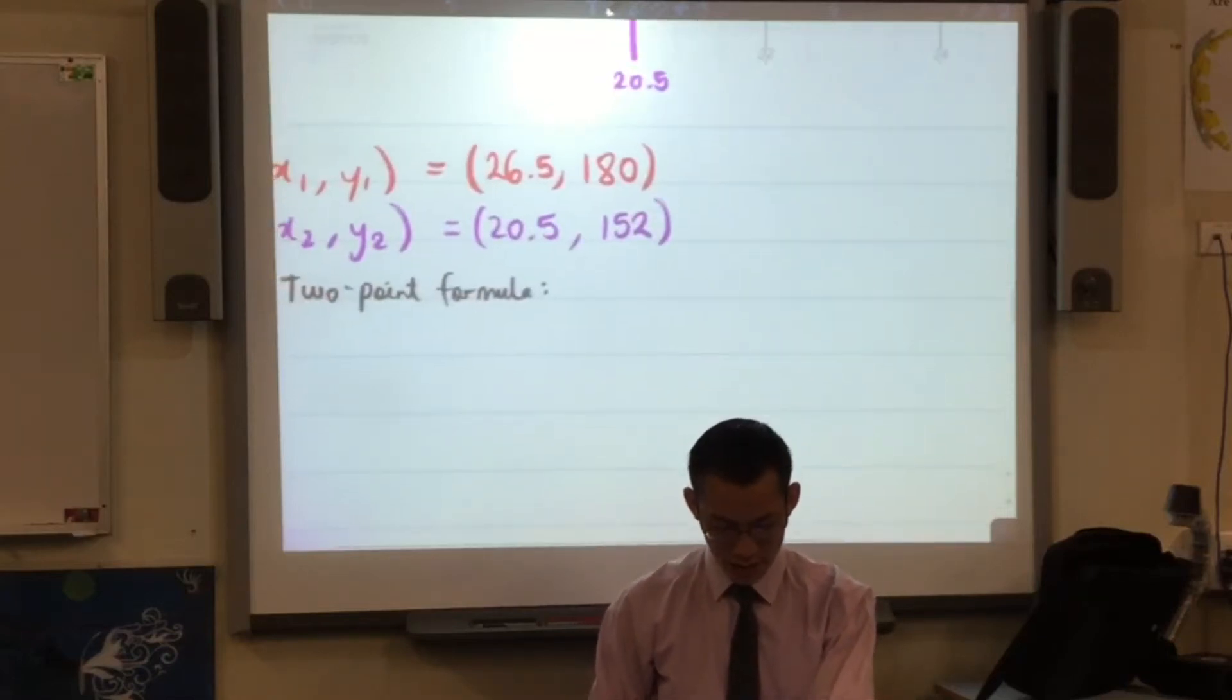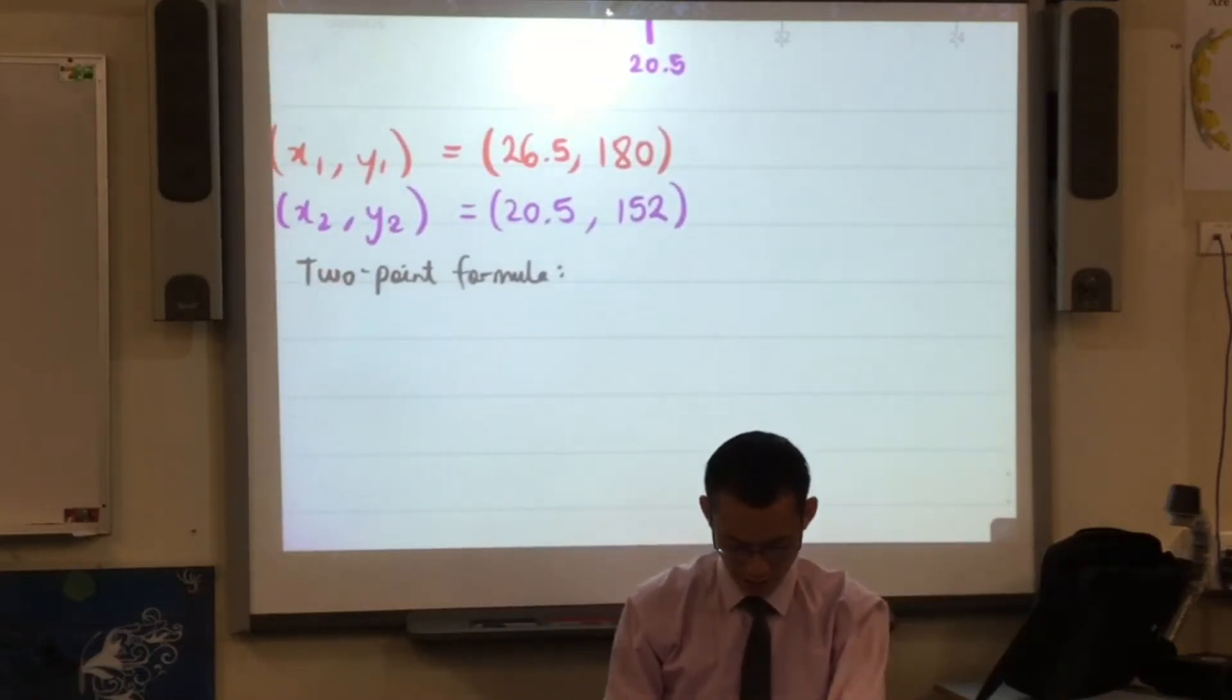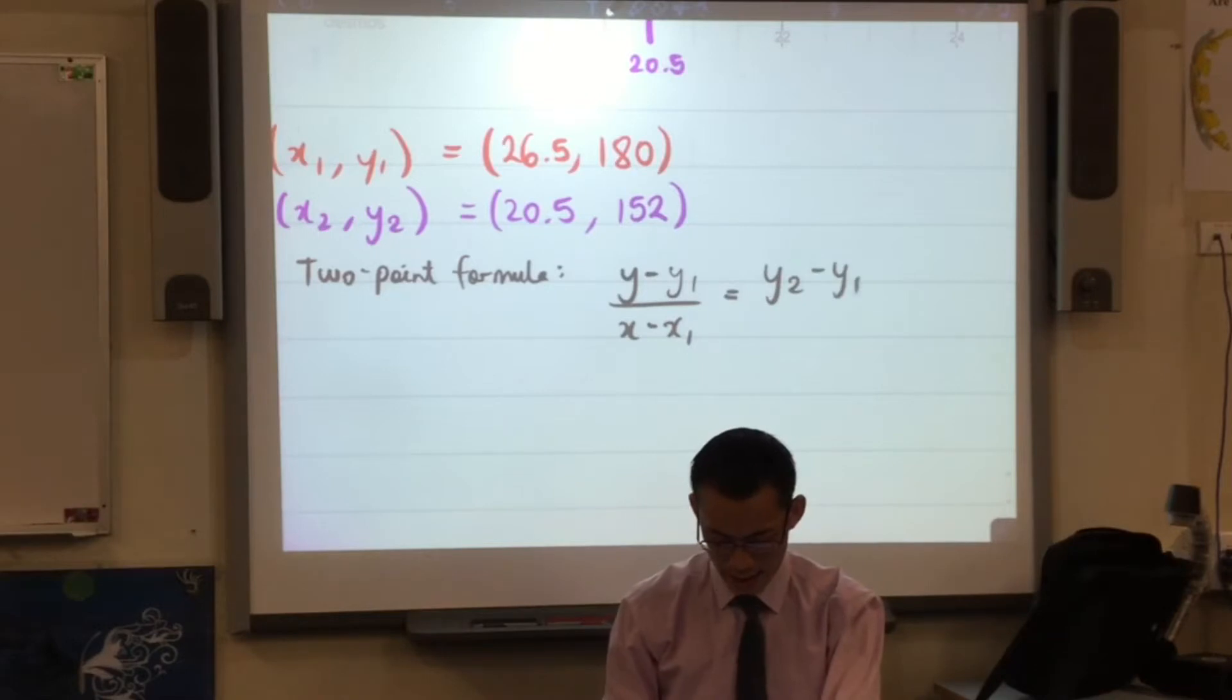We wrote it down before, maybe you didn't catch it. It's this long pair of fractions. We should have y minus y1 over x minus x1, and then the fraction on the right-hand side is actually very similar, like that. There's your gradient.